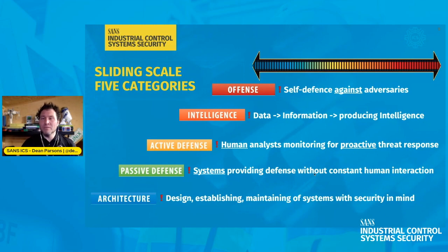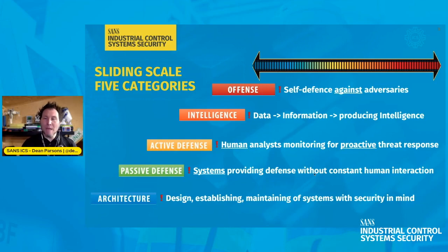At the basic bottom of the scale we're talking about architecture, which implies you're designing, establishing, and maintaining systems with security in mind from the get-go. Beyond that, you build on top of architecture with passive defenses — these are systems providing defense without consistent, constant human interaction. Almost a technology that is set-and-forget, but you can't stop there.